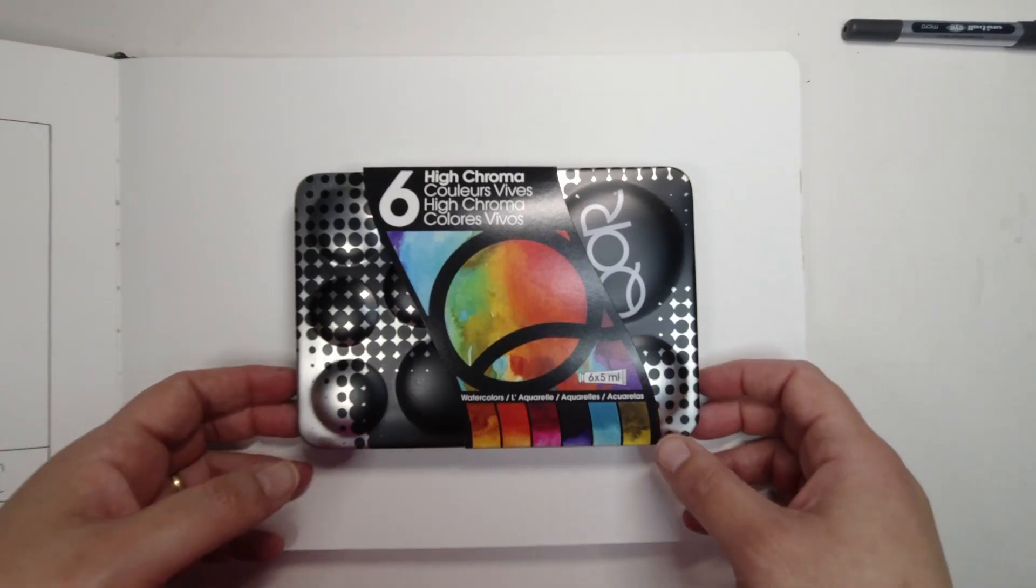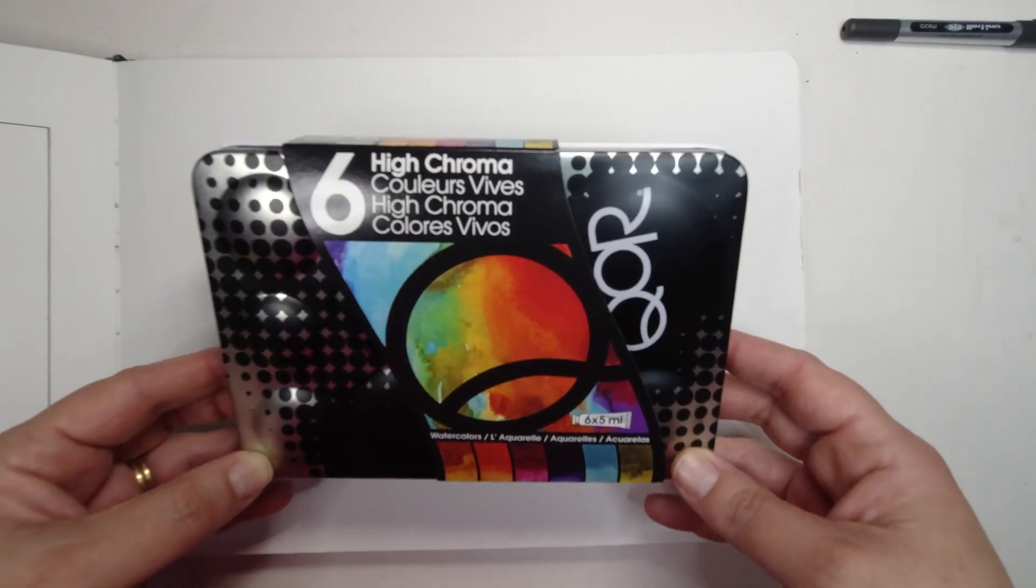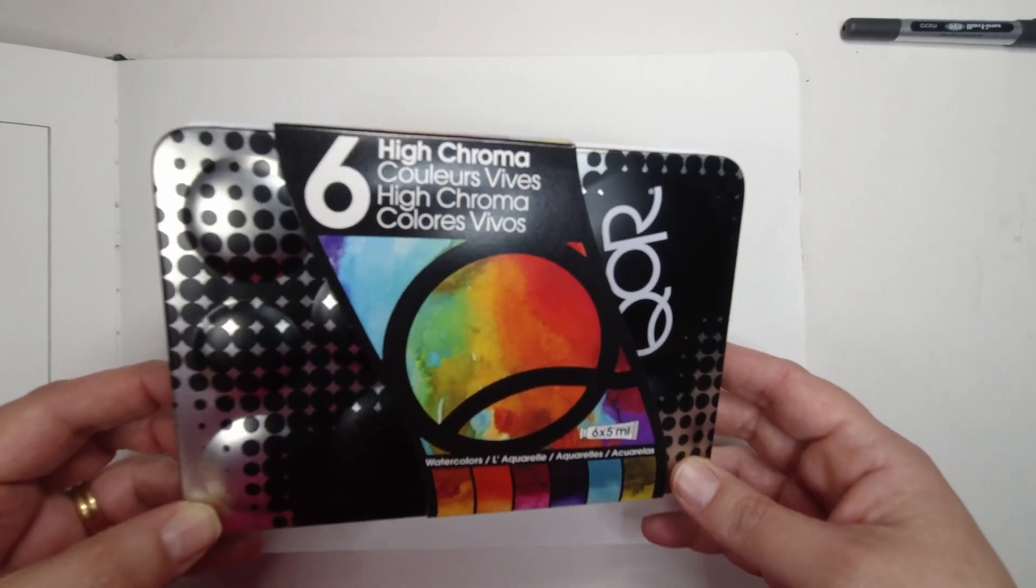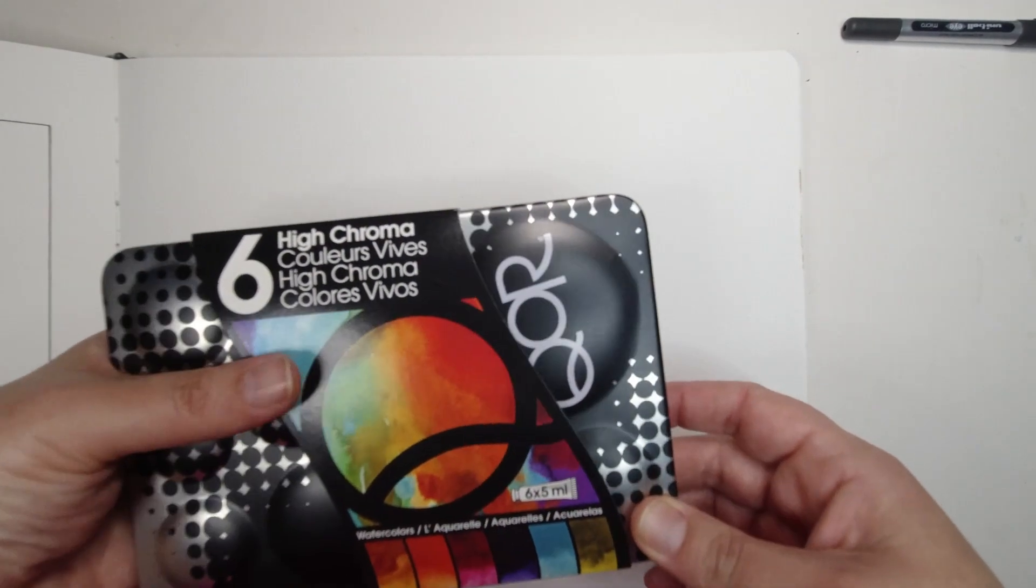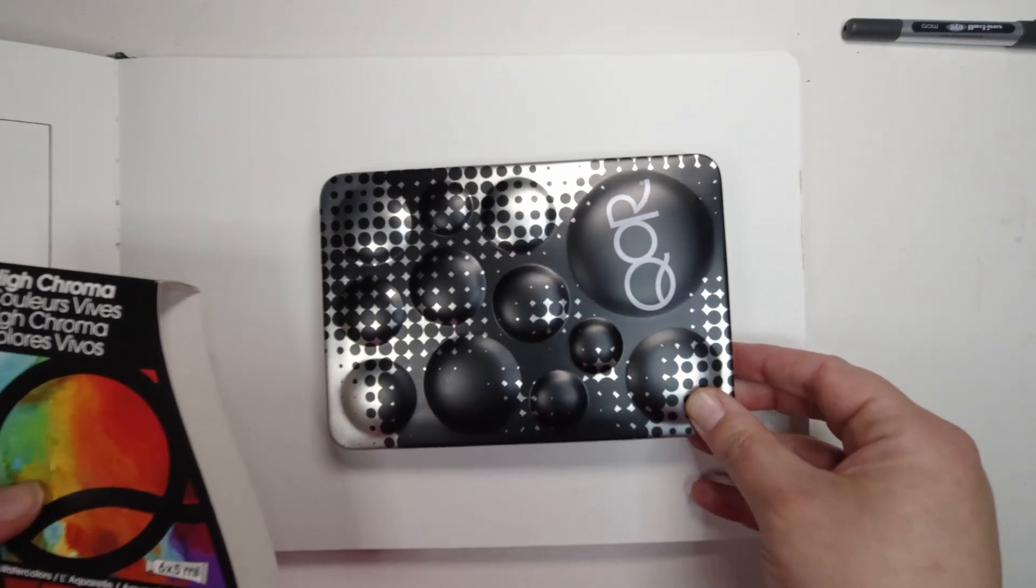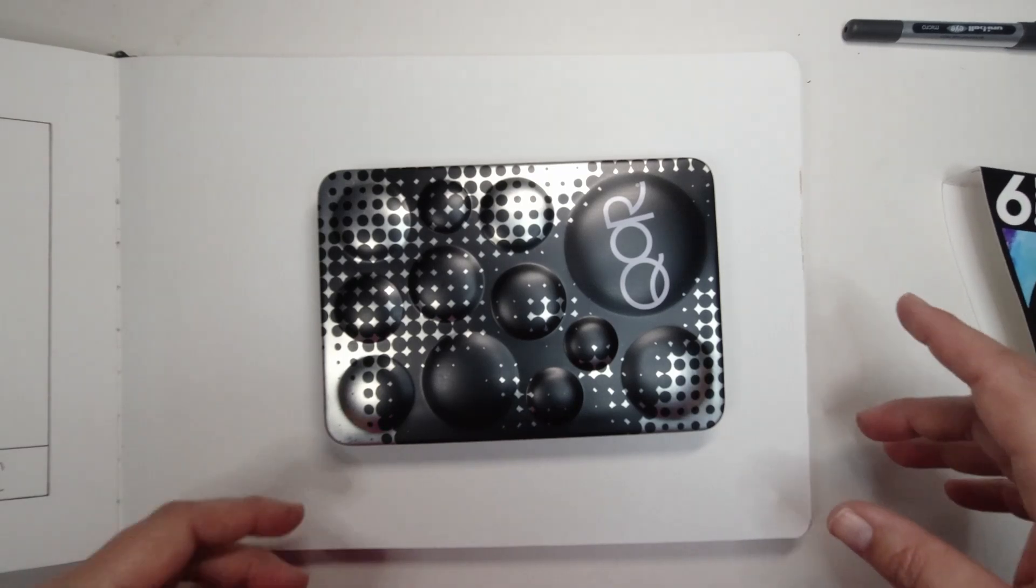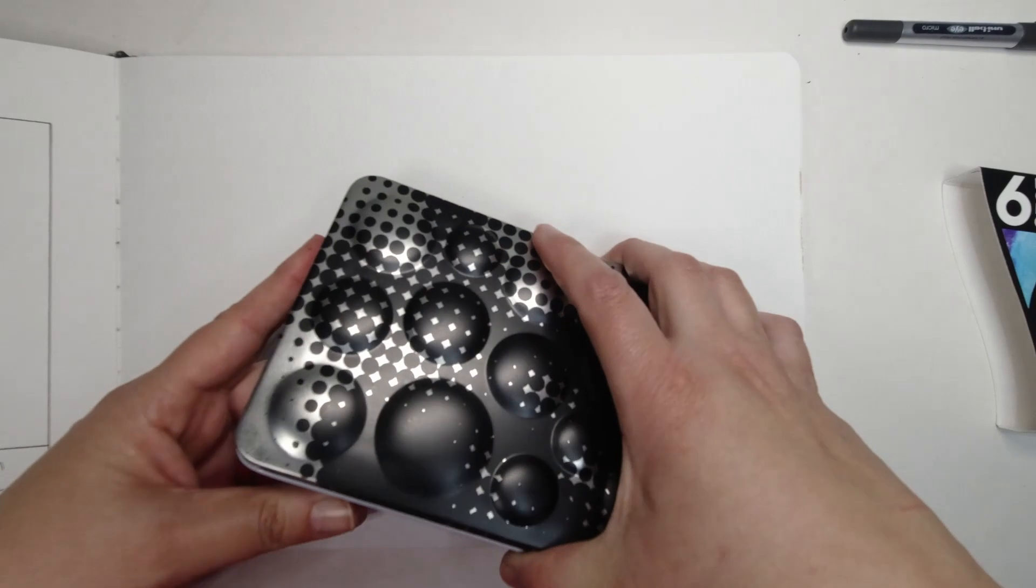Hi everyone, I'm back again with the other set of Core watercolors that I received for Christmas. This is the set of six high chromers and they are also five milliliter tubes, pretty much identical to the packaging that we looked at last week with the earth colors. I'll just quickly move things to one side here.